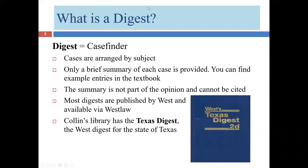So what is a Digest? Well, a Digest is basically just a list of little case blurbs. The most important thing about it isn't so much the blurbs — it's how they're organized. The way that reporters are organized, if we were to open up a Southwestern Reporter and turn to page 400, we might have a contract case, and right after that a murder case. We might have a case from Kentucky and then a case from Texas, a tort case, a car accident case, a theft case after that. There's no rhyme or reason to the order.